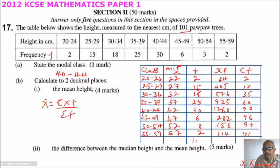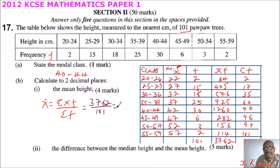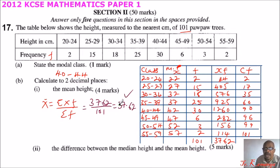The total frequency is 101. Using your calculator to sum all xf values gives a summation of xf equal to 3762. The mean is therefore 3762 divided by 101. Working to two decimal places, the mean equals 37.62.